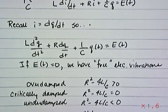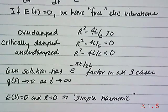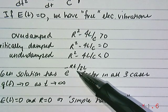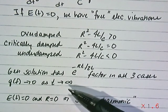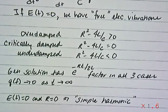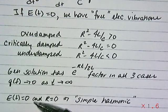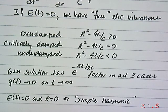In each of those three cases, though, the general solution to find the charge function has a factor of this form: e to the minus RT, R is the resistance, divided by 2 times L, the inductance. So what's going to happen is the charge is going to go to zero eventually as t goes to infinity. The question is how does it go to zero? Very much like how did the displacement of the mass-spring system go to zero? And also, if you don't have any resistance and you don't have any external voltage sources, what you're modeling is sometimes called the simple harmonic.